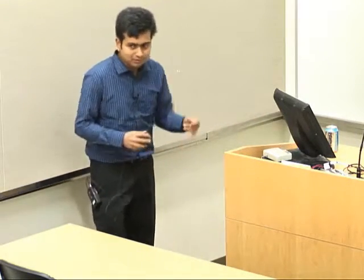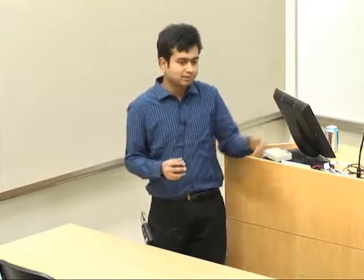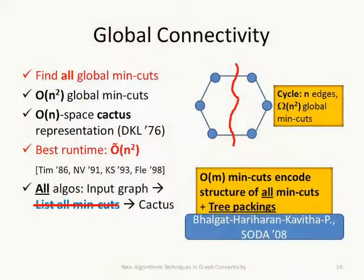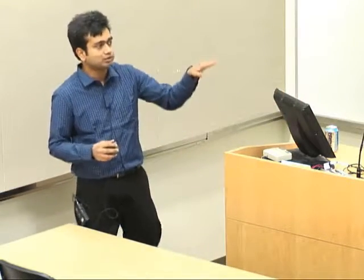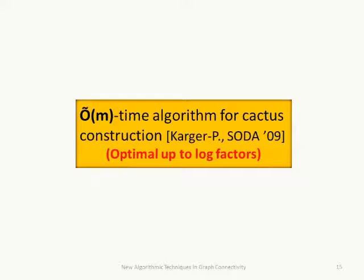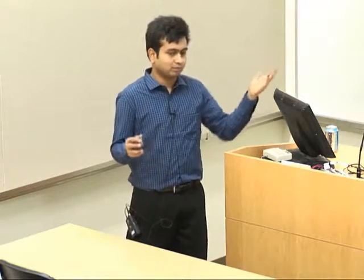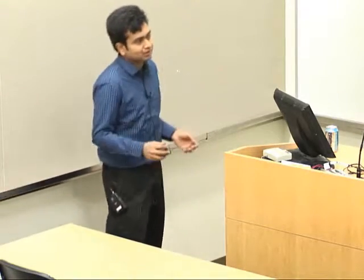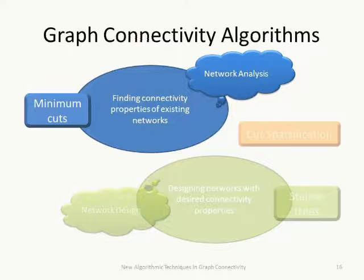Using this structural property together with tree packings — specifically an arborescence packing algorithm — we get the first linear-time algorithm for cactus construction, i.e., the first linear-time algorithm to find all min-cuts in a graph. This is optimal up to logarithmic factors since we must examine every edge at least once. This concludes the network analysis section.